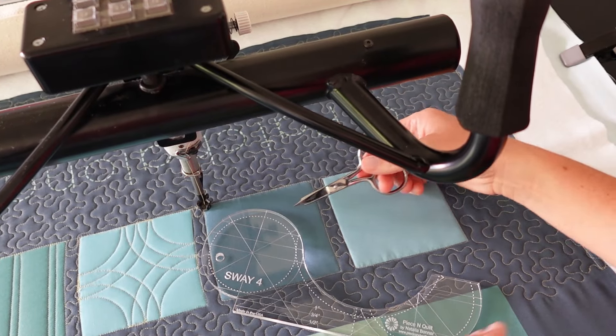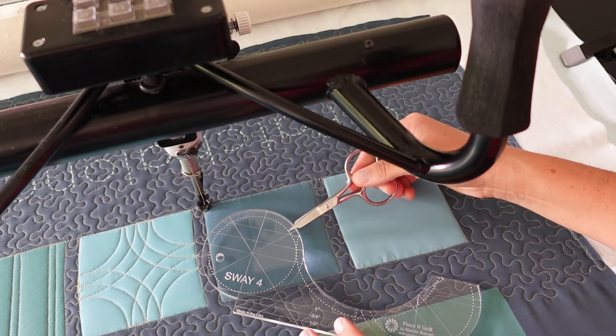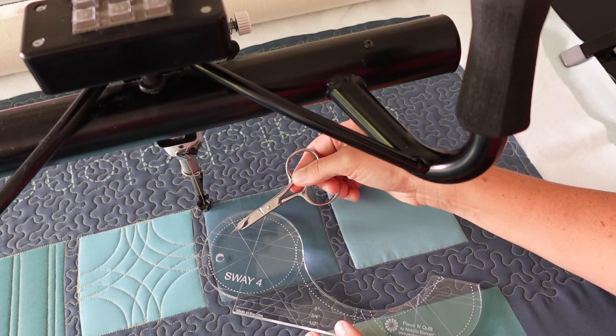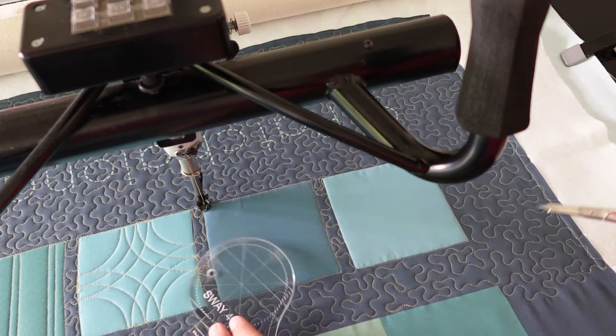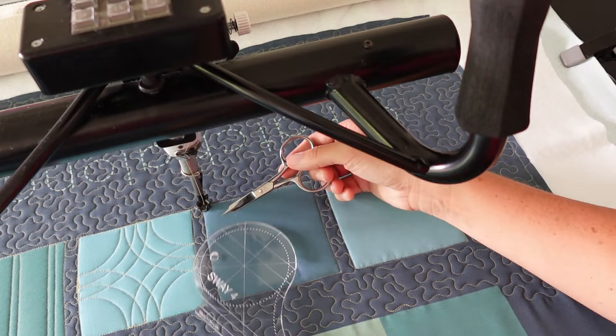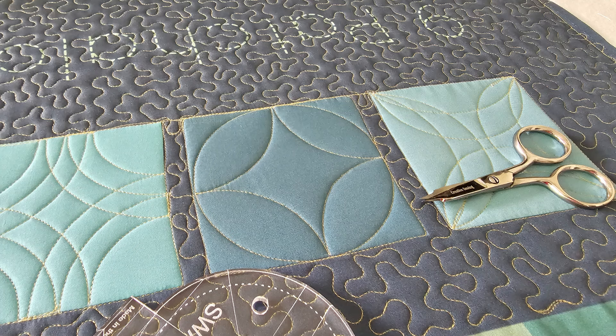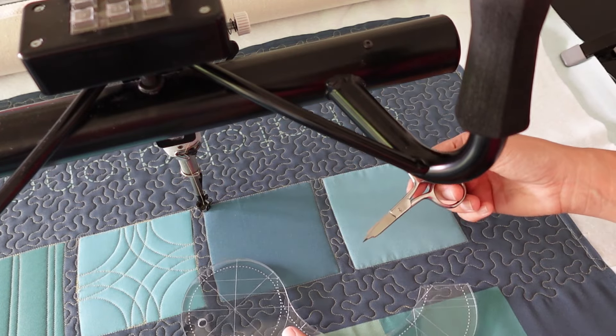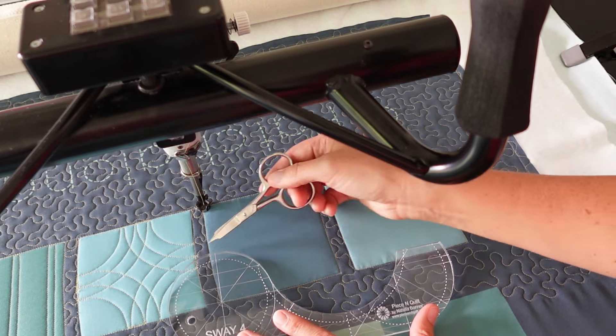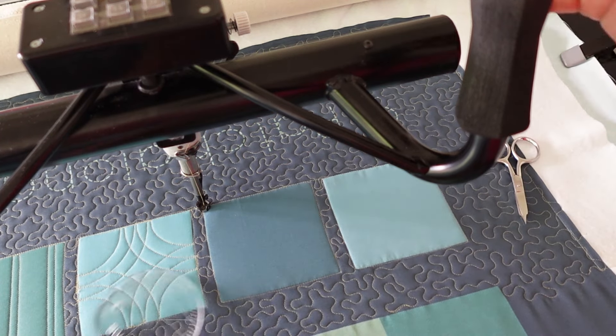I have designed these Sway machine quilting rulers so that you can use the markings on this circular end to line up on the ditch of a block and you're ready to begin quilting. Today I'm going to start by lining up this straight line or I could line up the X through the circular end of this Sway 4 on top of the corner here. I'm going to be quilting point to point curves working all the way around the block.